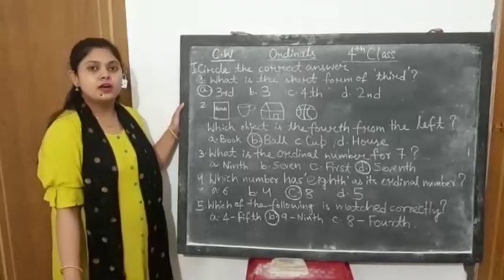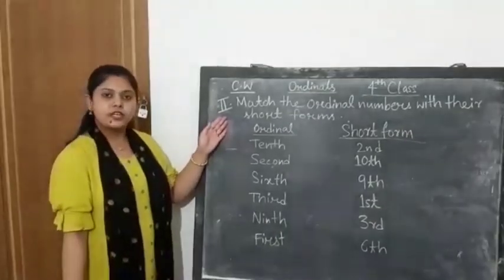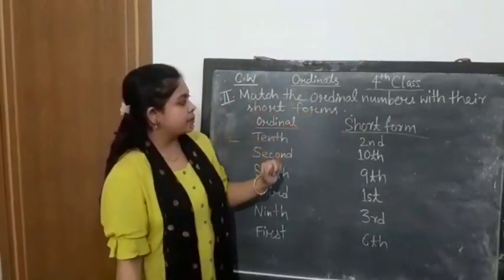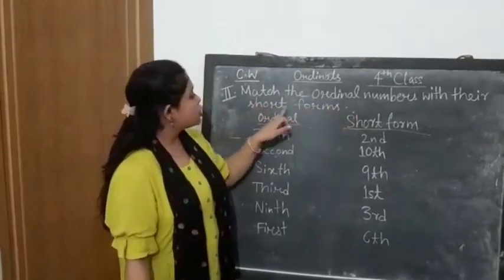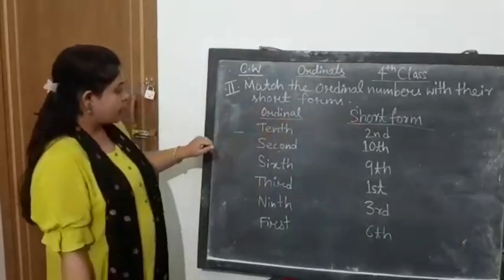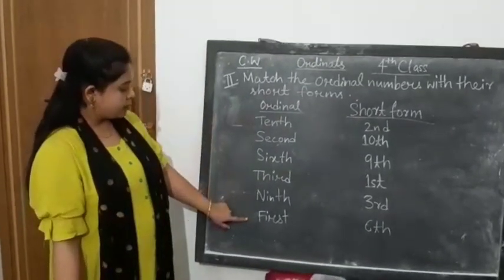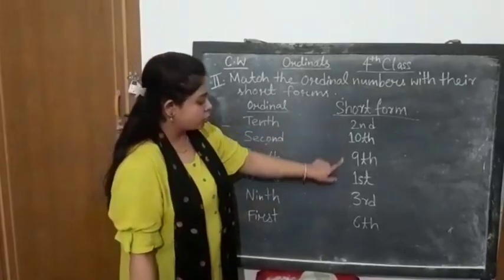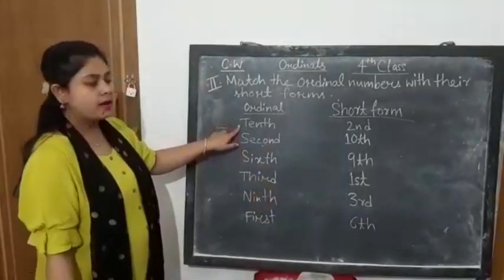Now see question number 2. Match the ordinal numbers with their short forms. Here you can see ordinal numbers are written and you have to match with their short forms.